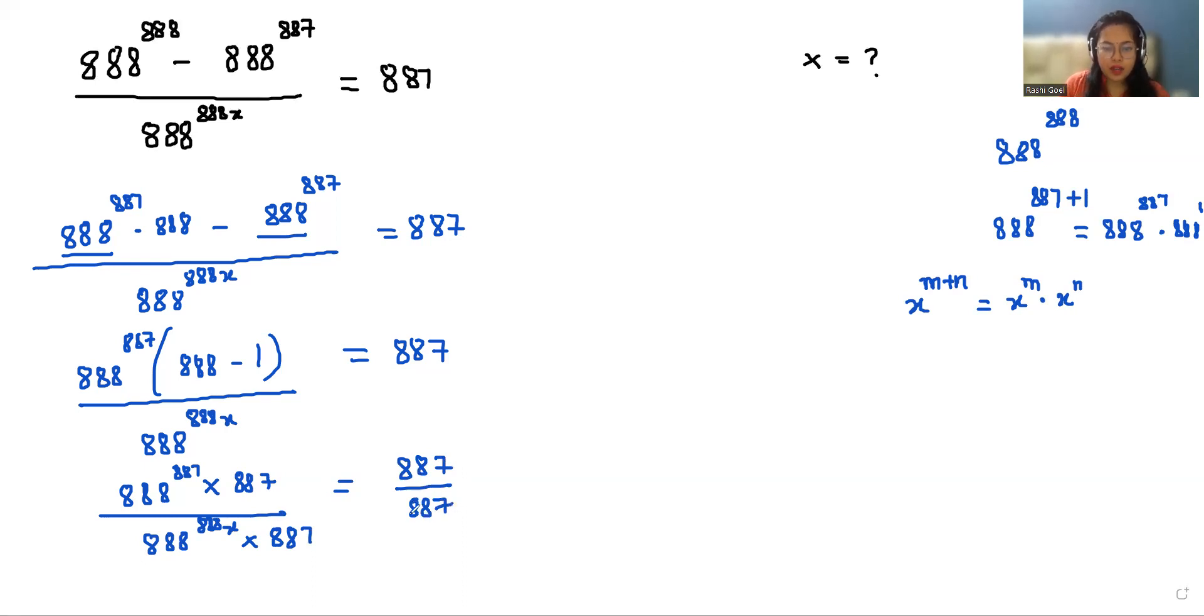So from here we can eliminate this and got 1, and we can eliminate this also. So what is left: 888 power 887 divided by 888 power 888 x.